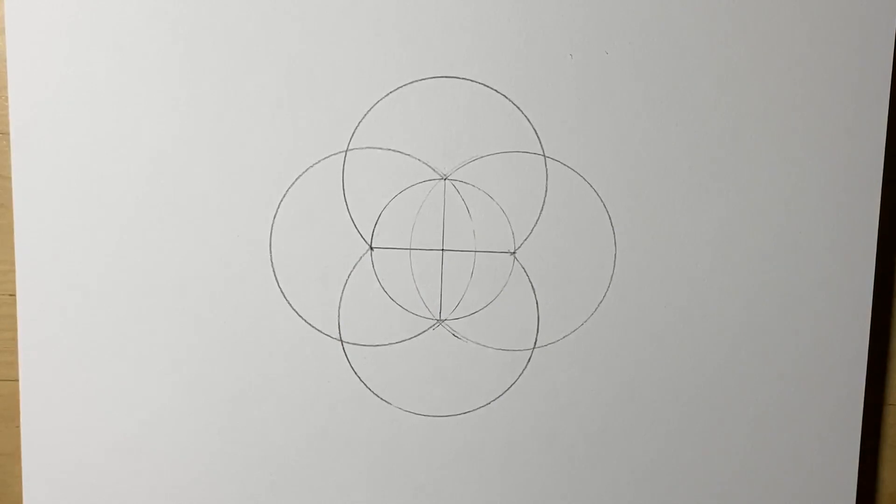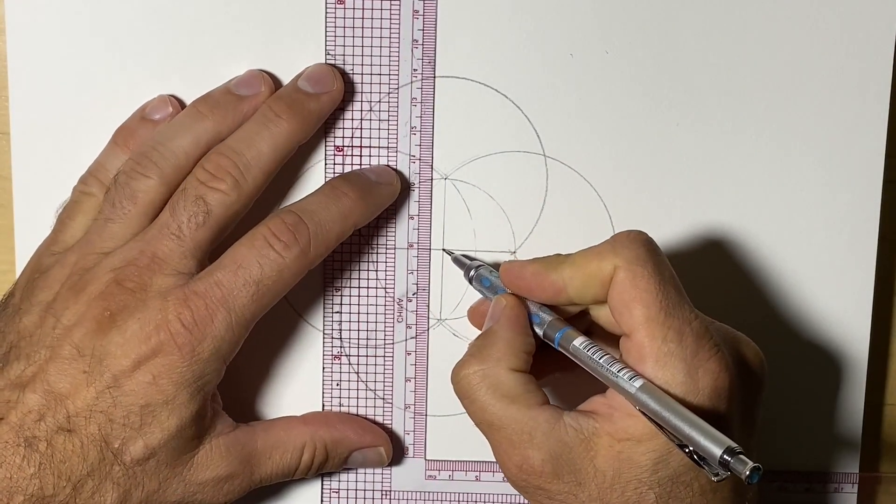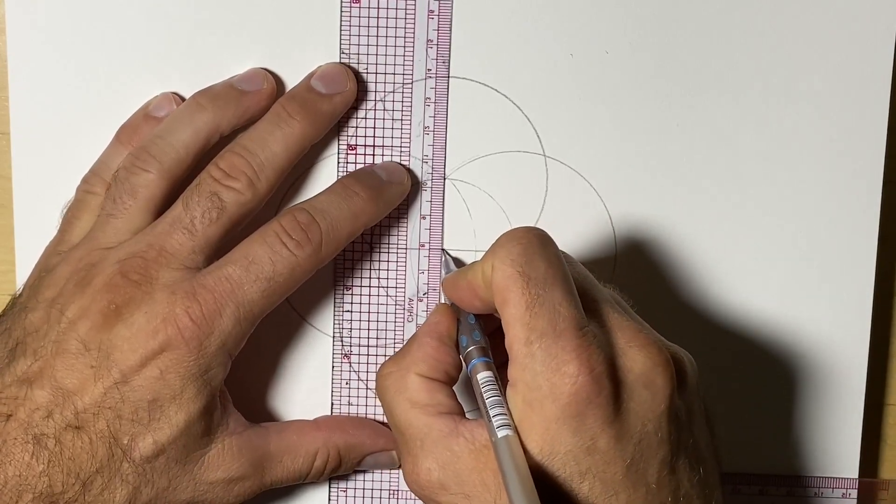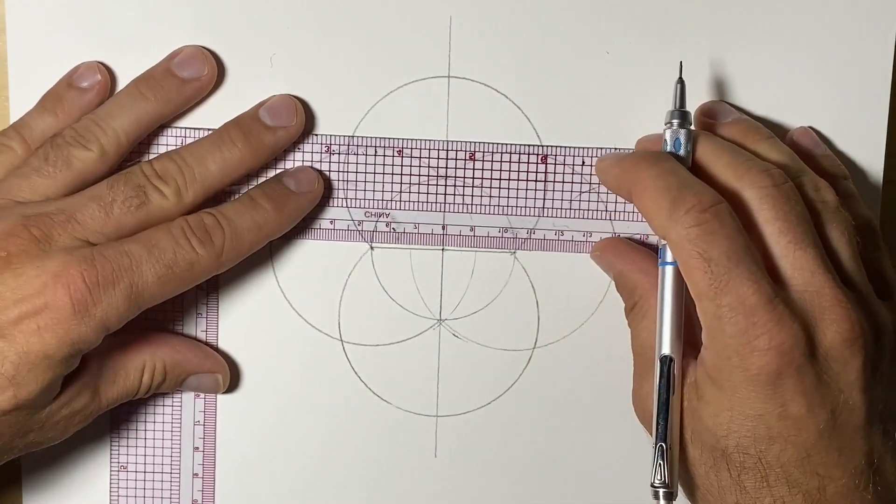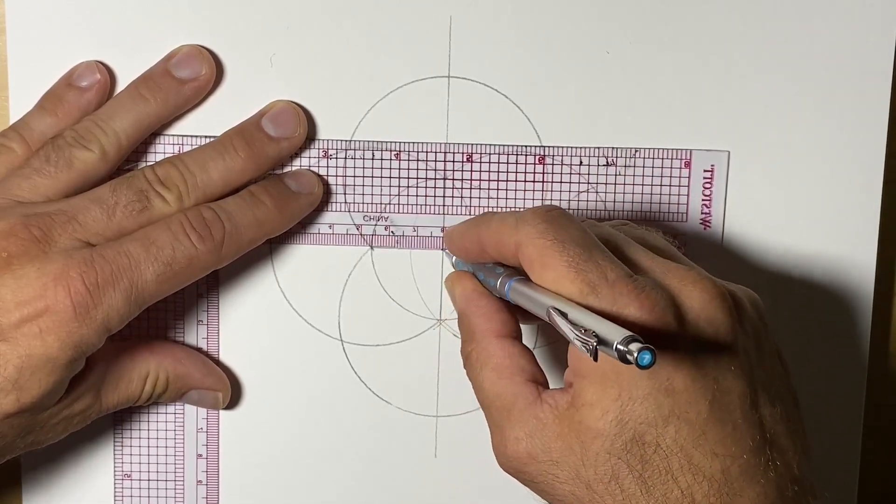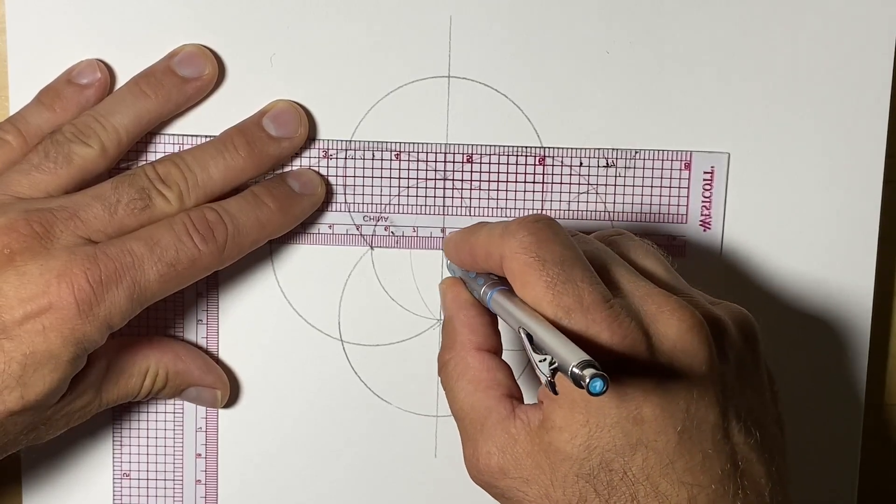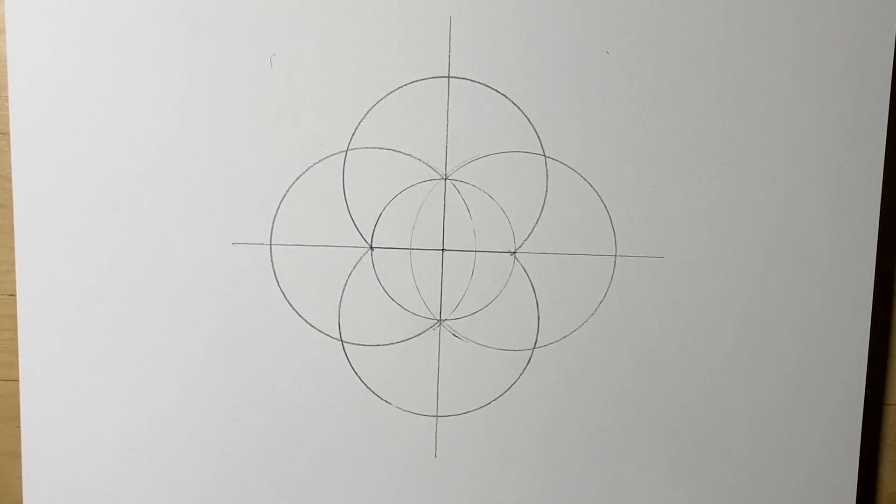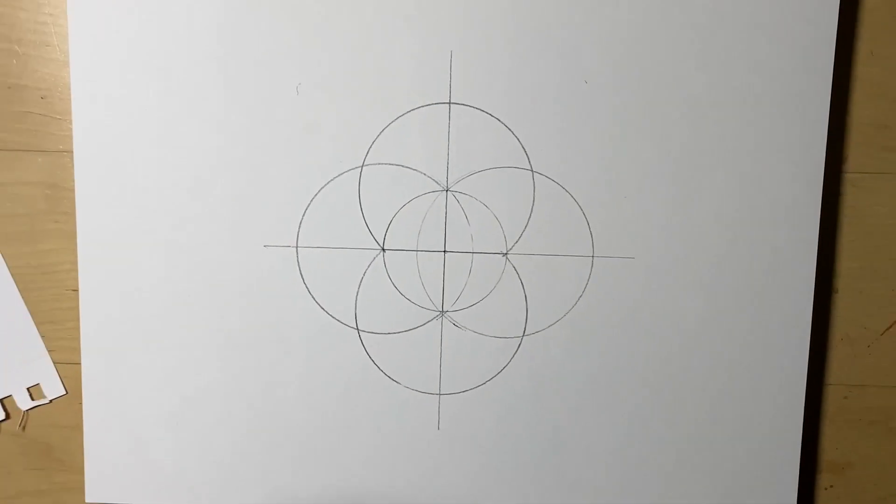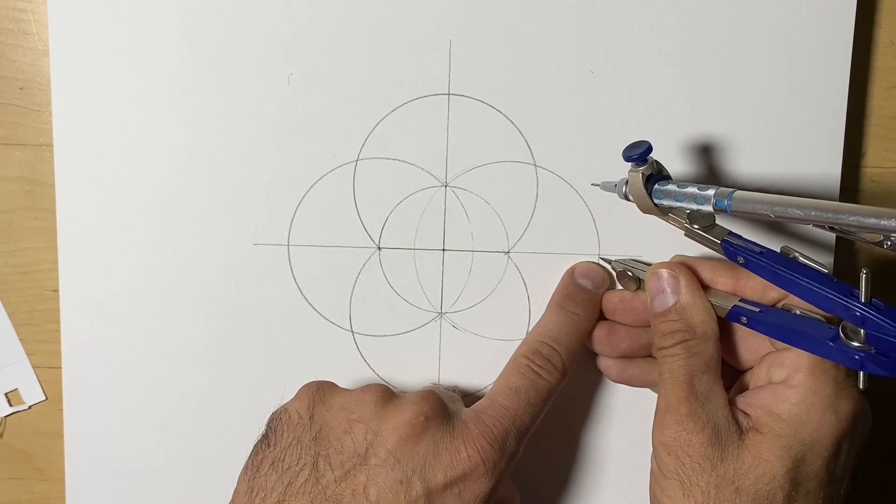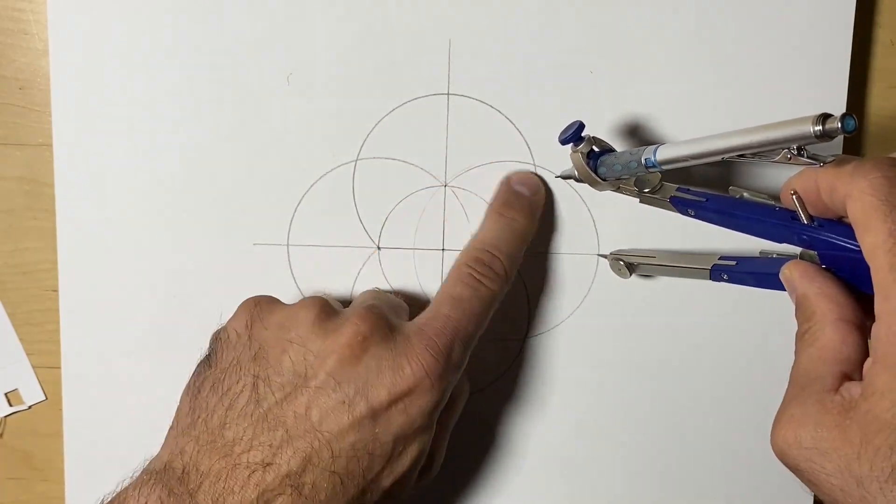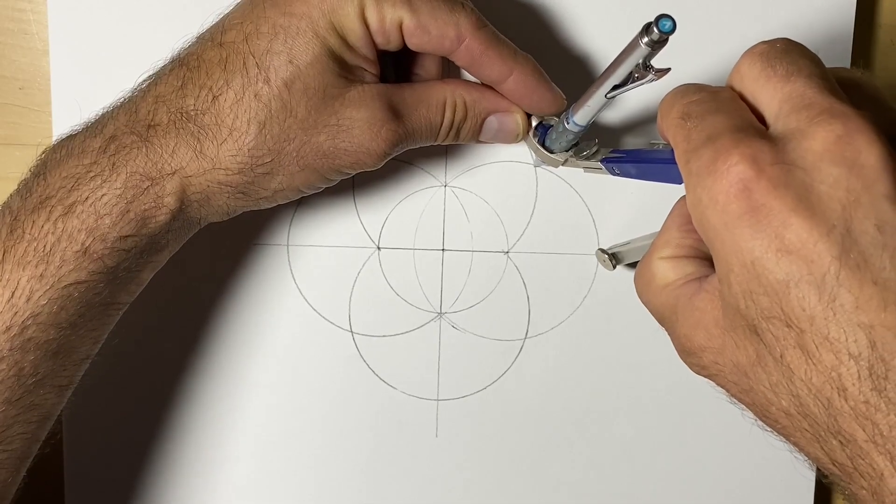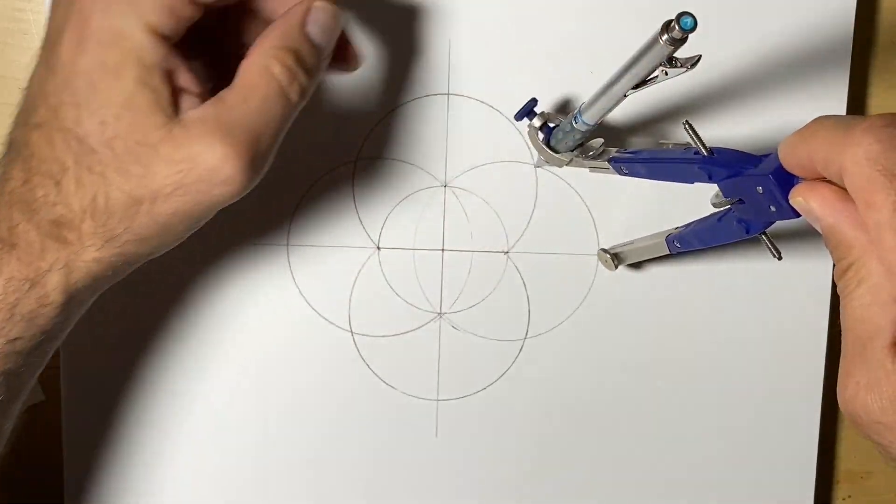Next, we're going to extend the two starting perpendicular lines we drew. I suppose at the beginning we could have just made them larger. The next step will be to repeat a similar process. Now we're going to put the compass point where the line crosses the circle once more, and we're going to extend the compass to where the two outer circles intersect. And we're going to draw our arc.